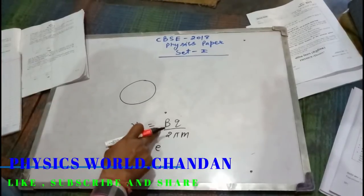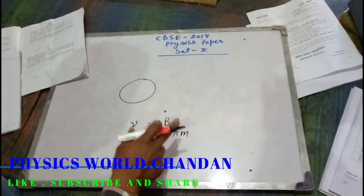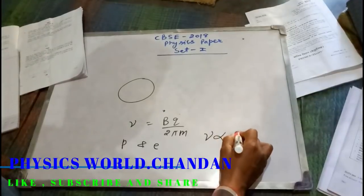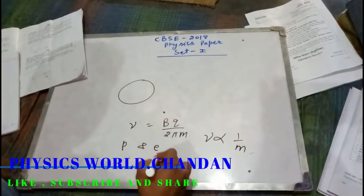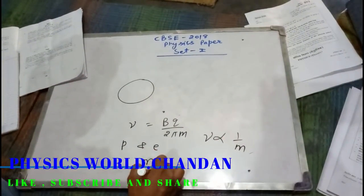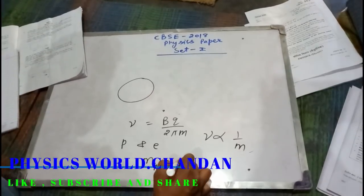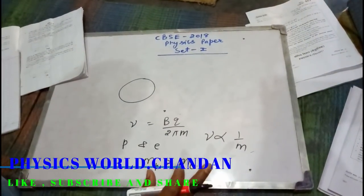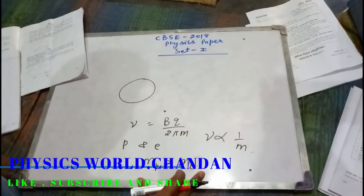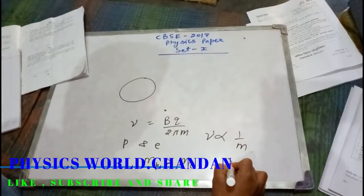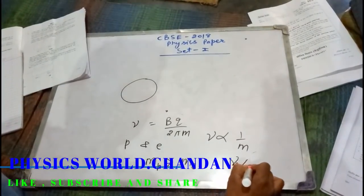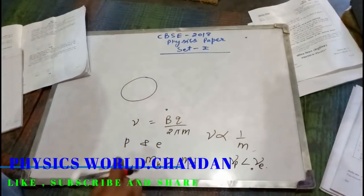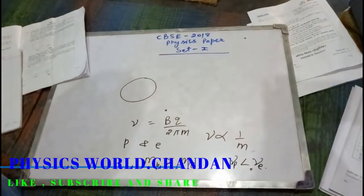The mass of a proton is greater than the mass of an electron, therefore the frequency for the electron will be greater than the frequency of the proton, because the electron has less mass. Ab hum discuss karenge yahan par second numerical.